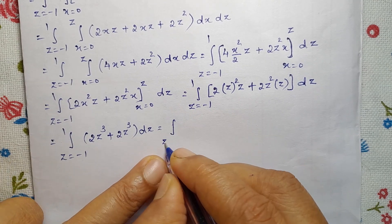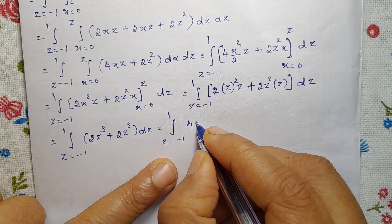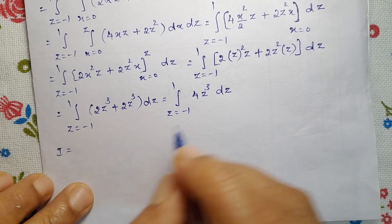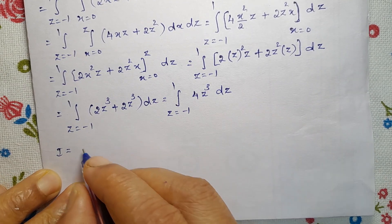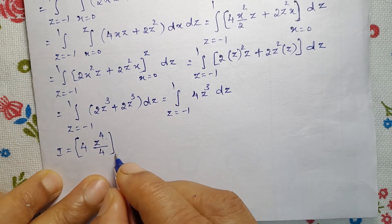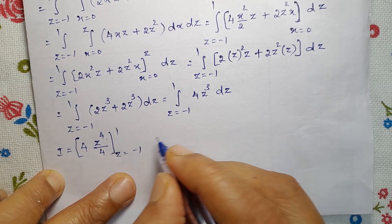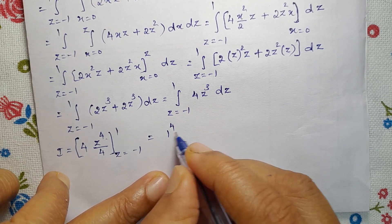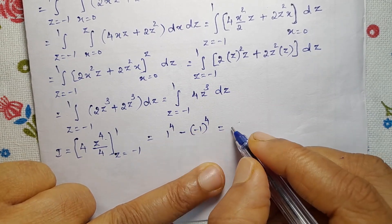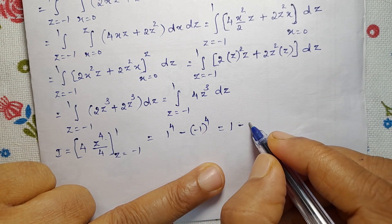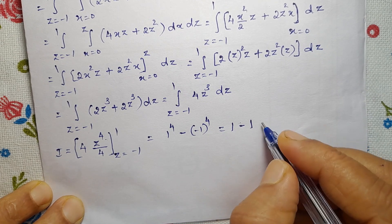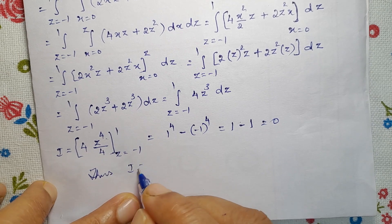Equals integral of Z from minus 1 to 1 of 4Z cubed dz. Integrating: 4 times Z to the power 4 divided by 4, limit Z from minus 1 to 1. The 4's cancel, leaving Z to the power 4, from minus 1 to 1. So: 1 to the power 4 minus (minus 1) to the power 4 equals 1 minus 1 equals 0, because the even power makes it positive. Thus I equals 0 is the answer.